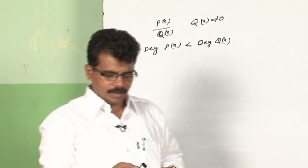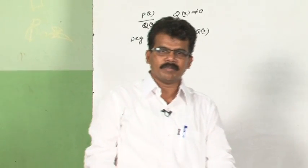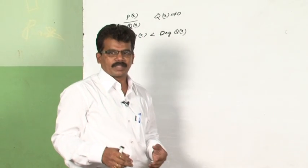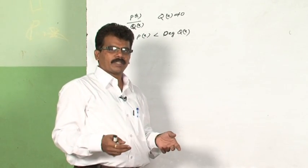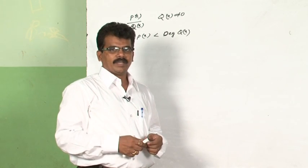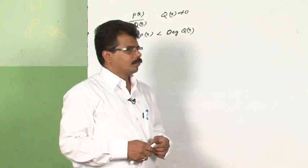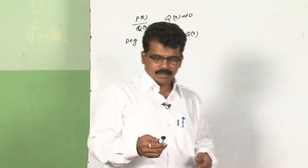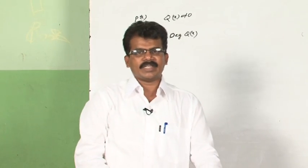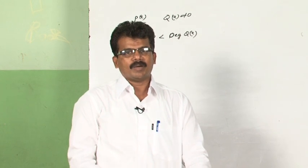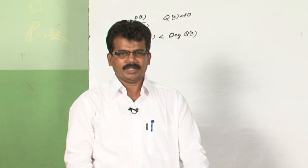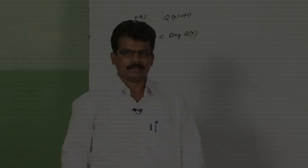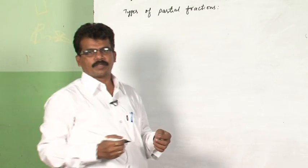Here we deal with rational functions in which the denominator is expressed as a product of linear factors or quadratic polynomials. We write the given integrand into a sum of simpler rational fractions using partial fraction decomposition. Now let us see how many types of partial fractions there are.